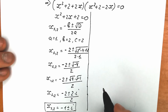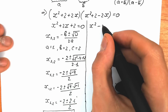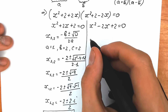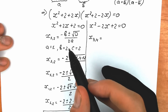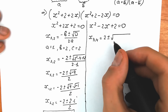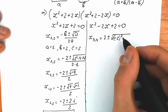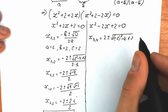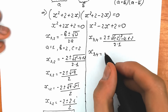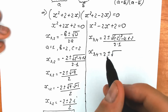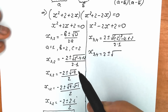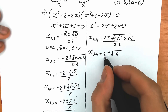Now let's solve the second equation: x² − 2x + 2 = 0. Using the same formula for x₃ and x₄: x₃,₄ = (2 ± √((−2)² − 4·1·2)) / (2·1) = (2 ± √(4 − 8)) / 2 = (2 ± √(−4)) / 2. We get absolutely the same discriminant: √(−4), divided by 2.